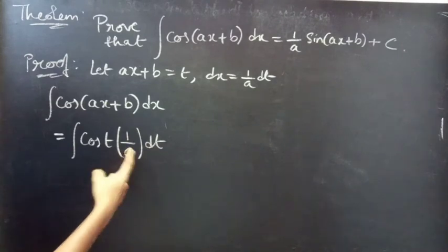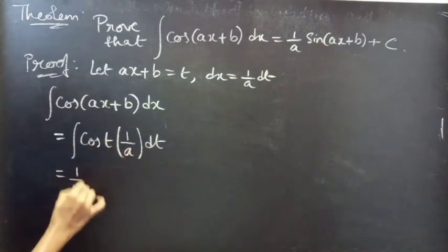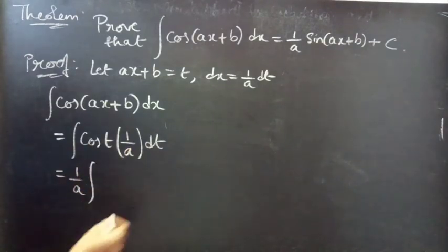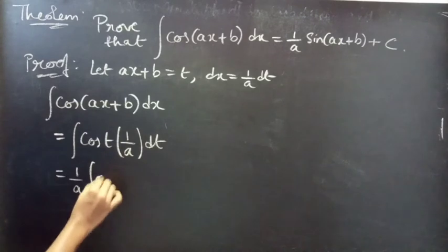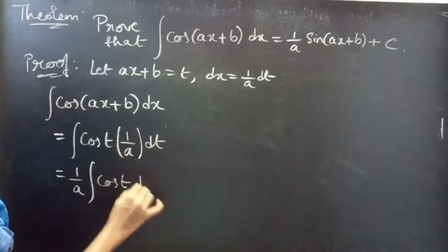1 by a is constant, so you can take it outside the integral. This equals to 1 by a into integral cos t into dt.